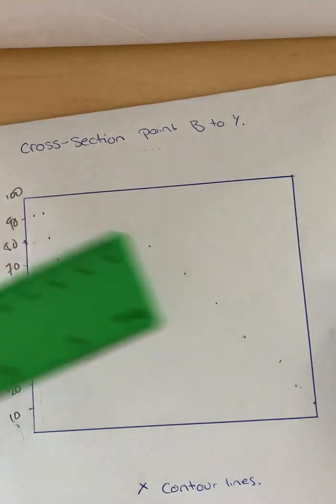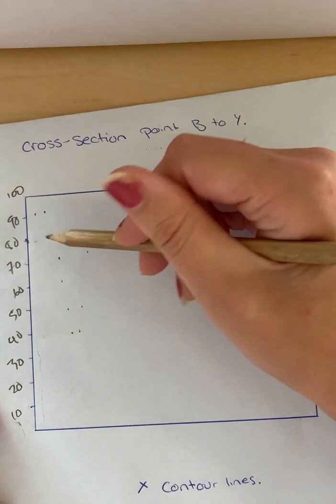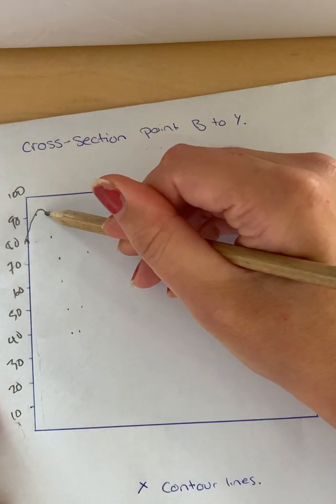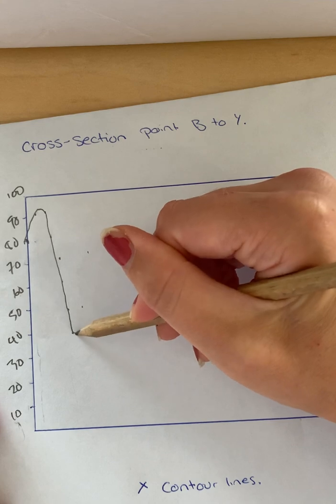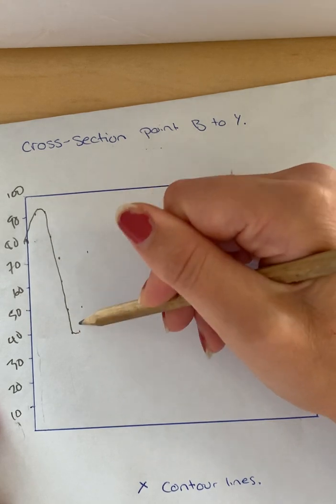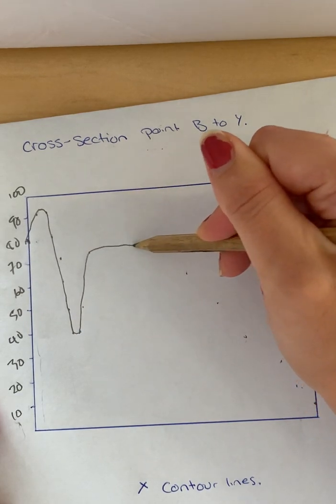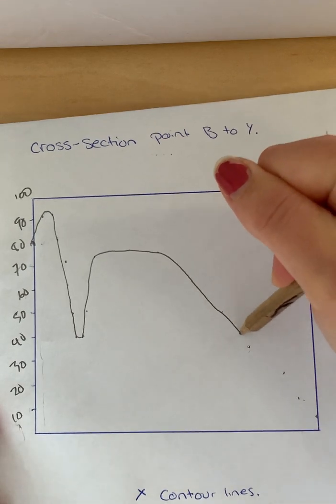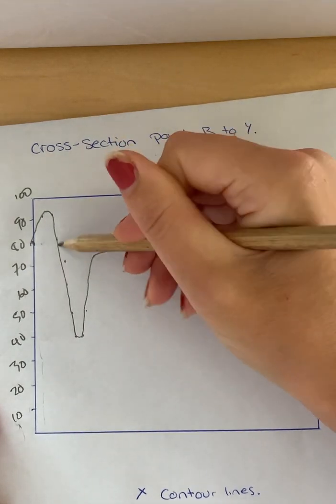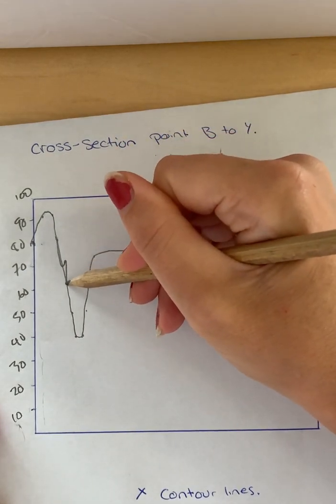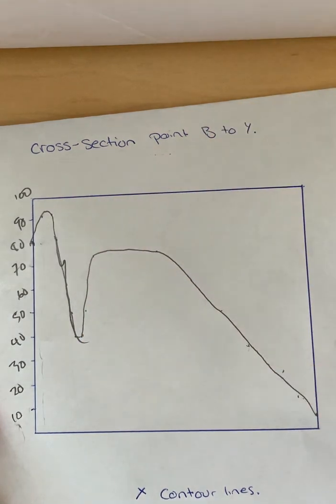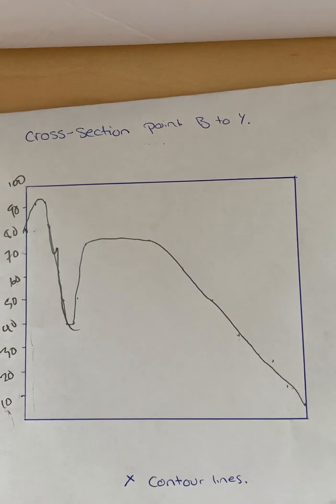So please don't use your ruler to draw the lines because mountains are not dead straight. So we literally just draw it like this. Okay, sorry, that went like that. A little dip there, a little repeat on itself. And that's your cross section. Okay, that's all you have to do. That's your cross section.